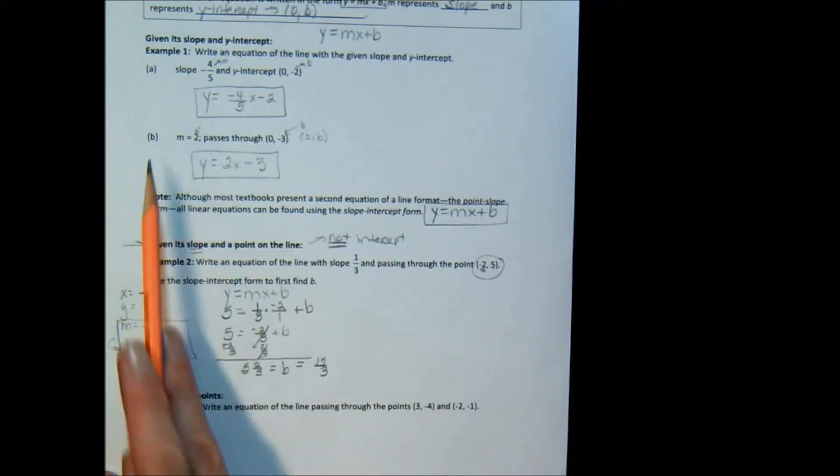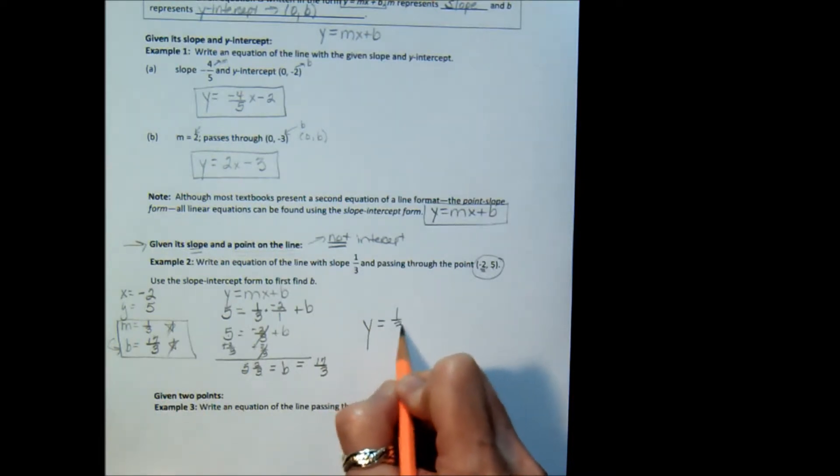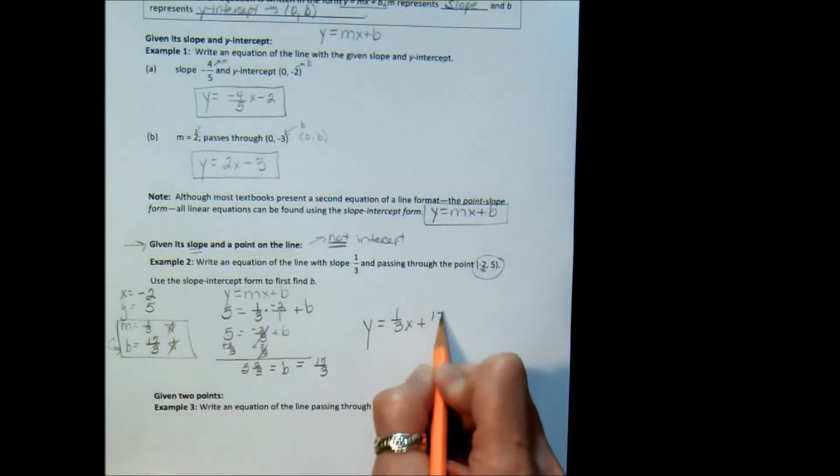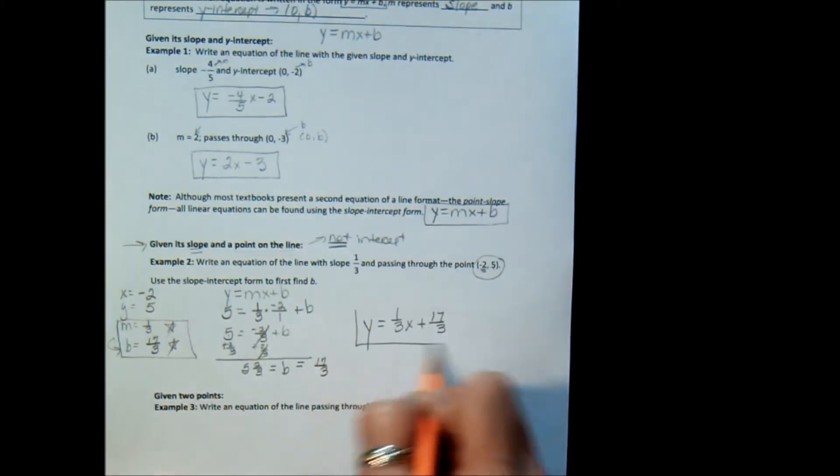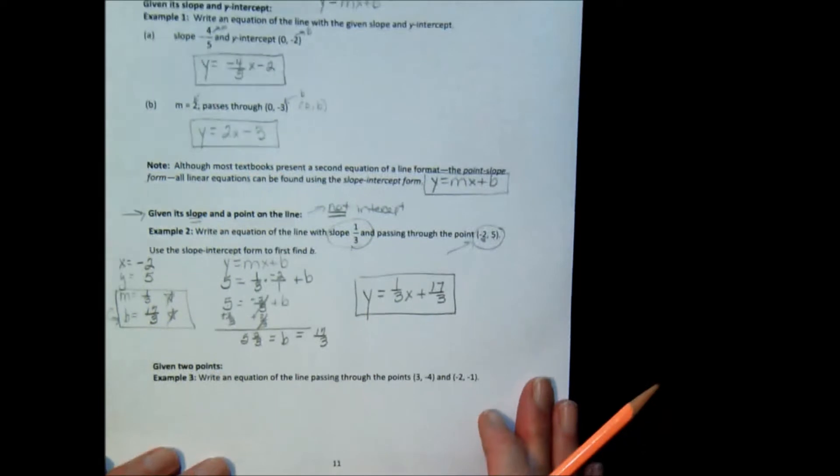And now I'm back to one like example 1a and b, where I have the m and I have the b, and those are the two pieces I need. So I'm going to fill it in to my generic equation. y equals 1 3rd x plus 17 3rds. And that is the equation of the line that has a slope of 1 3rd and passes through that point. So let's do it again.